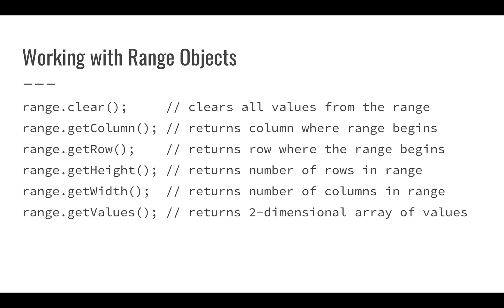Once we have a range from our getRange() call, we have several things we can do with it. We can clear the range completely. We can get the column or row where the range begins. We can use getHeight() and getWidth(), or getNumRows() and getNumColumns() to find out how many rows and columns are in the range. We can also call getValues(), which returns a two-dimensional array of values — much more efficient than calling getRange() and getValue() for each individual cell.